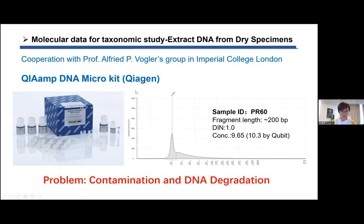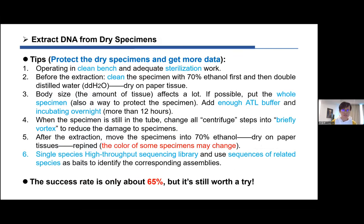I tried this work in cooperation with Professor Alfred's group at Imperial College London. We used the Qiagen micro kit but made some modifications. All modifications were made to protect the dry specimens and to get more data, since we also need the morphological data and don't want to destroy the specimens. The first requirement is to operate in a clean bench with adequate sterilization. Before extraction, clean the specimen — I usually use 70% ethanol first, then double-distilled water, and let it dry on paper tissue.